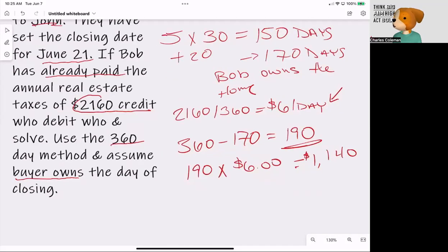So when we see the $1,140, that is going to be a credit to Bob, debit to John. $1,140, $1,140.